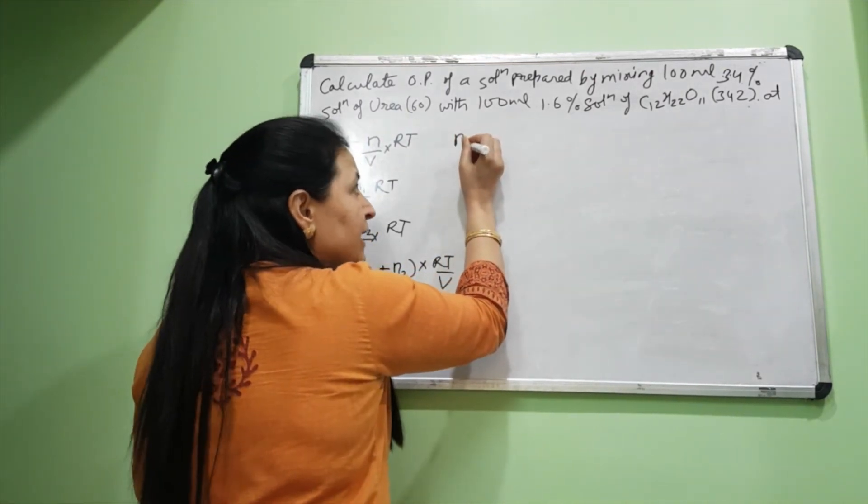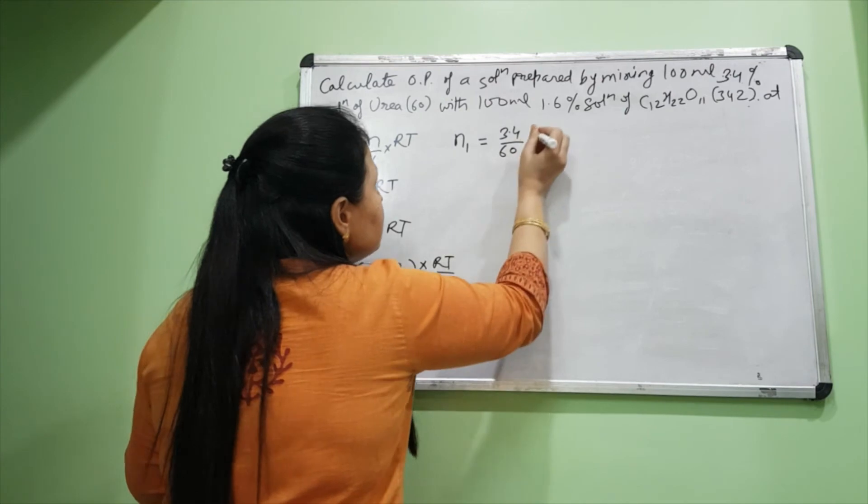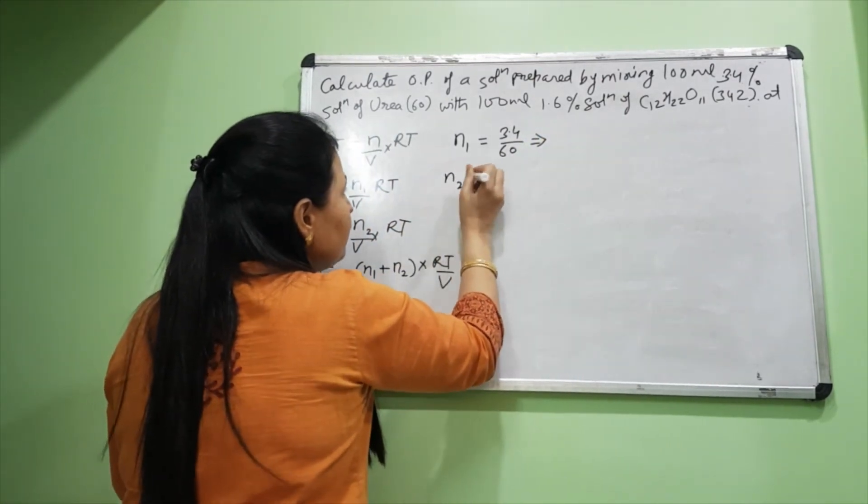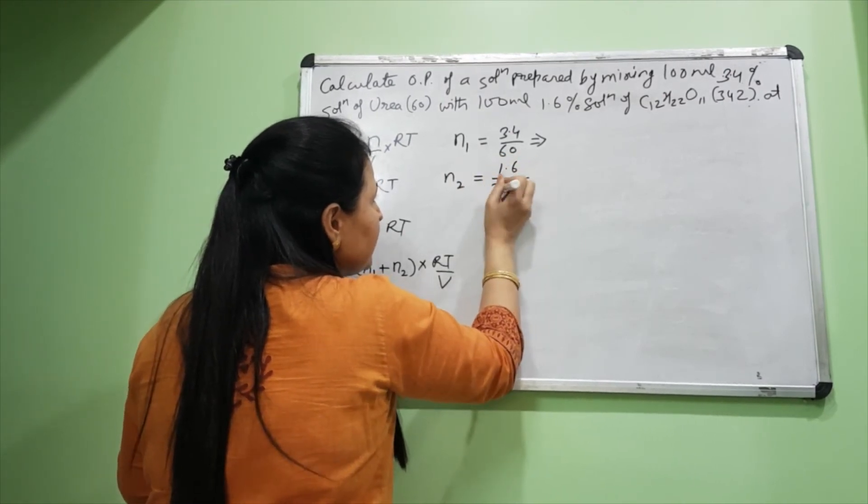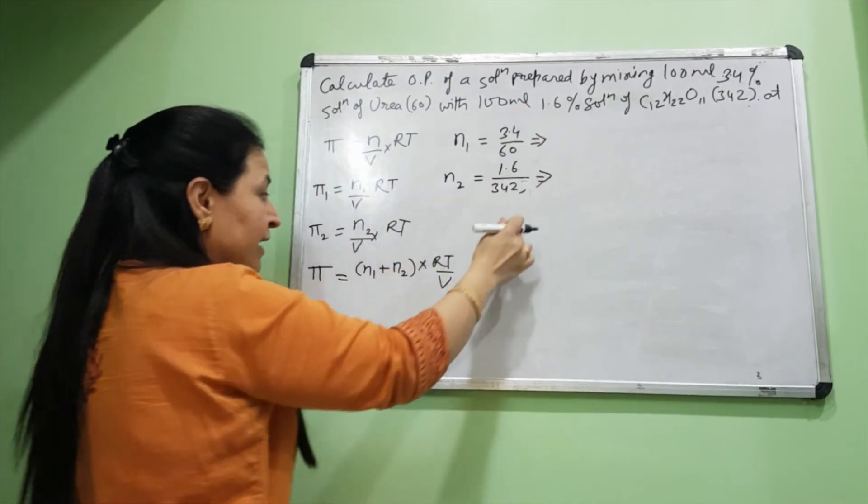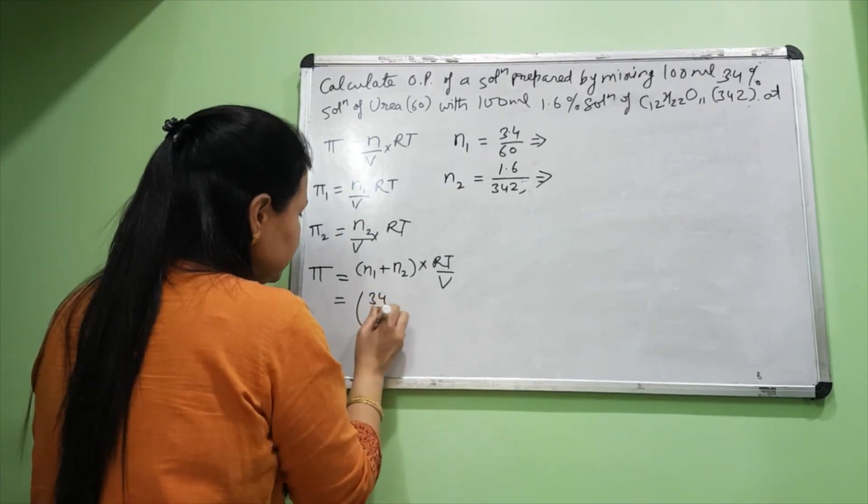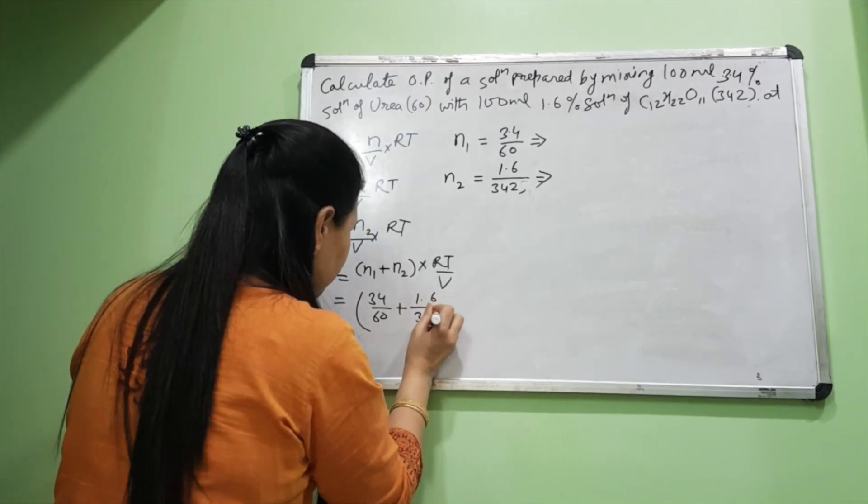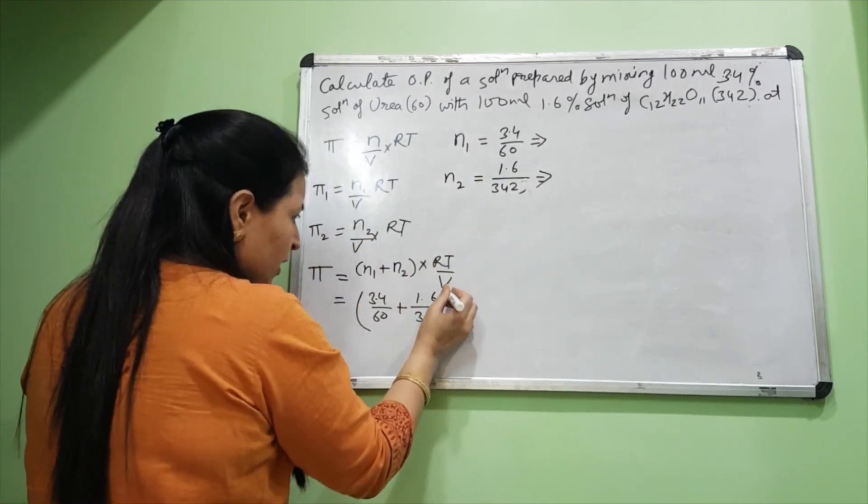First, let's find the number of moles of urea: n₁ = 3.4/60. Let's find this value. Similarly, let's find n₂, the number of moles of glucose, which is 1.6/342. You need to find these two number of moles, which we will substitute here. Inside this bracket, we will have 3.4/60 plus 1.6/342.